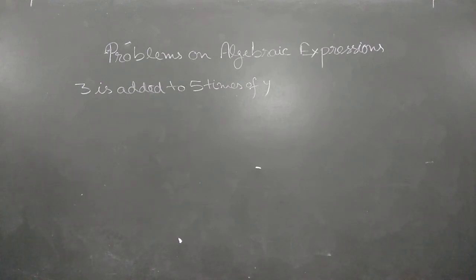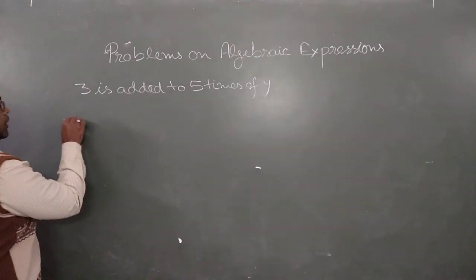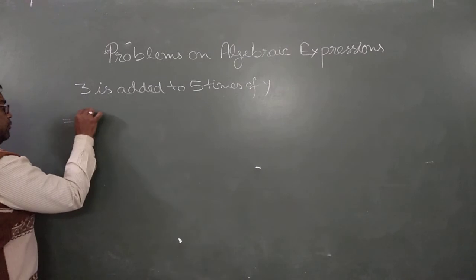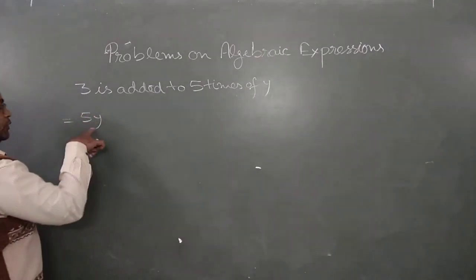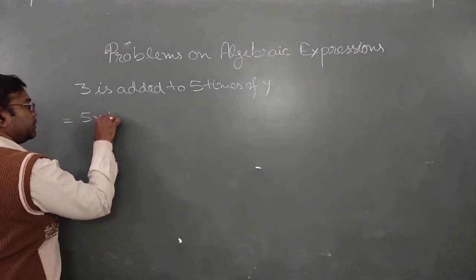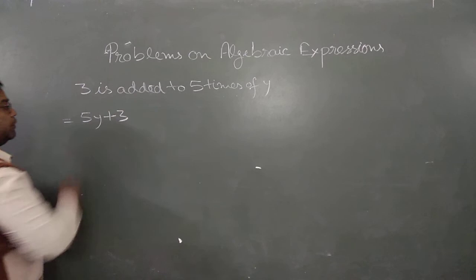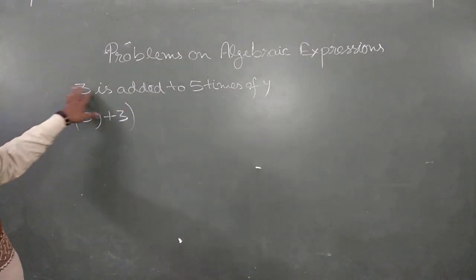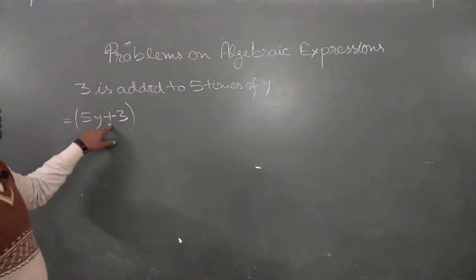Next statement: 3 is added to 5 times of y. First, 5 times of y means 5 into y, which is 5y. Then 3 is added, so it's 5y plus 3. Use brackets. If 3 is subtracted instead of added, we change the sign to minus.